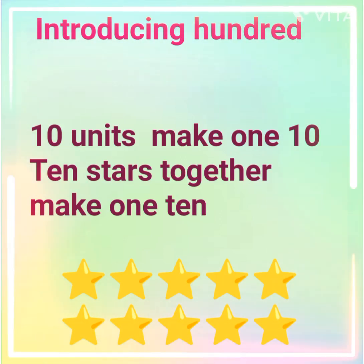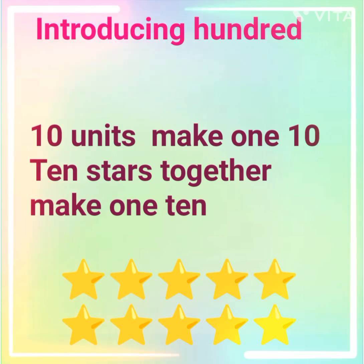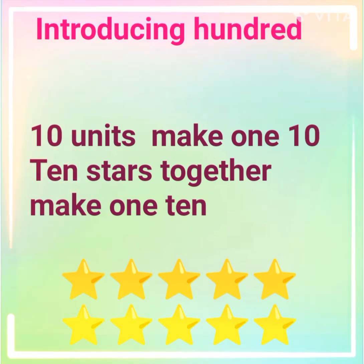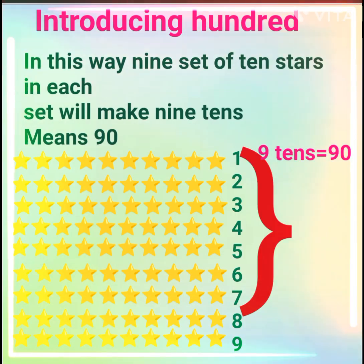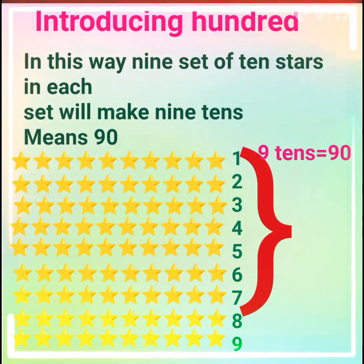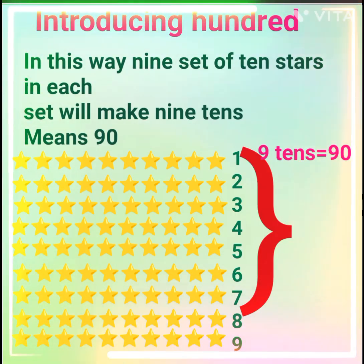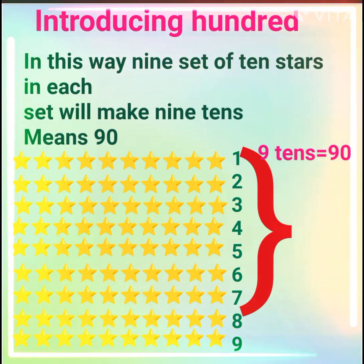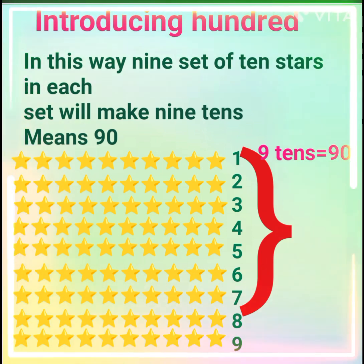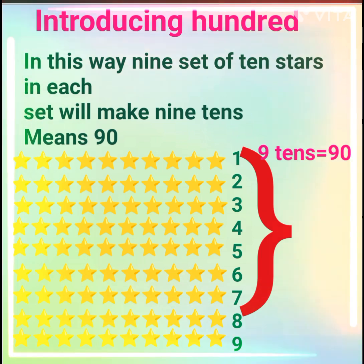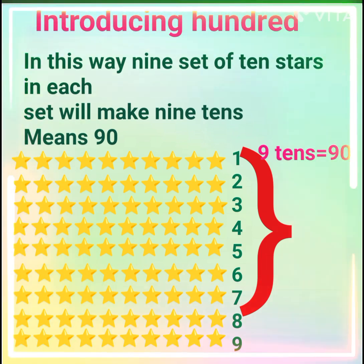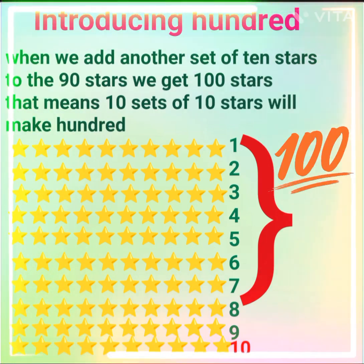Introducing 100. 10 units make one 10, and 10 stars together make one 10. In this way, 9 sets of 10 stars in each set will make 9 tens, which means 90.